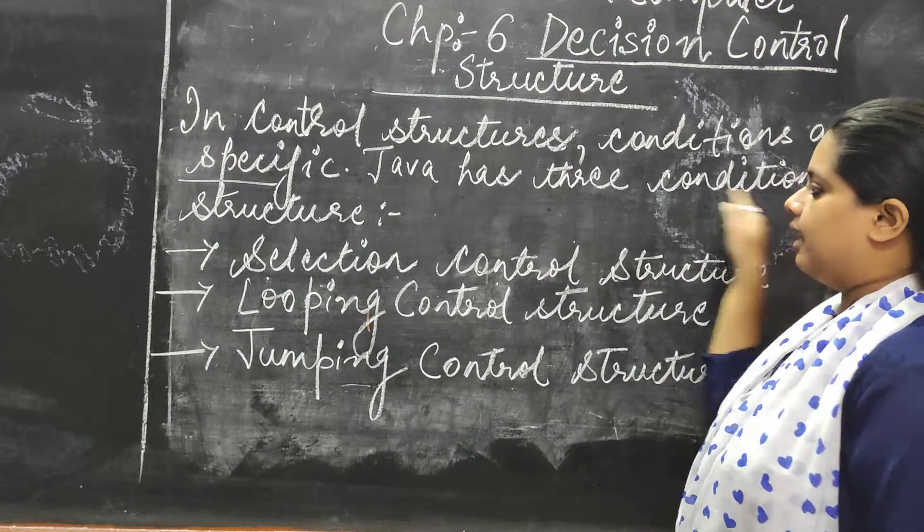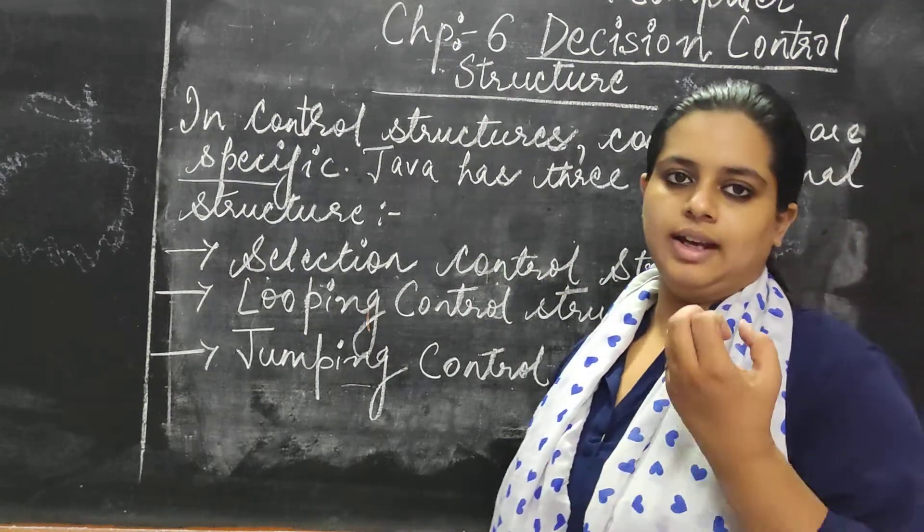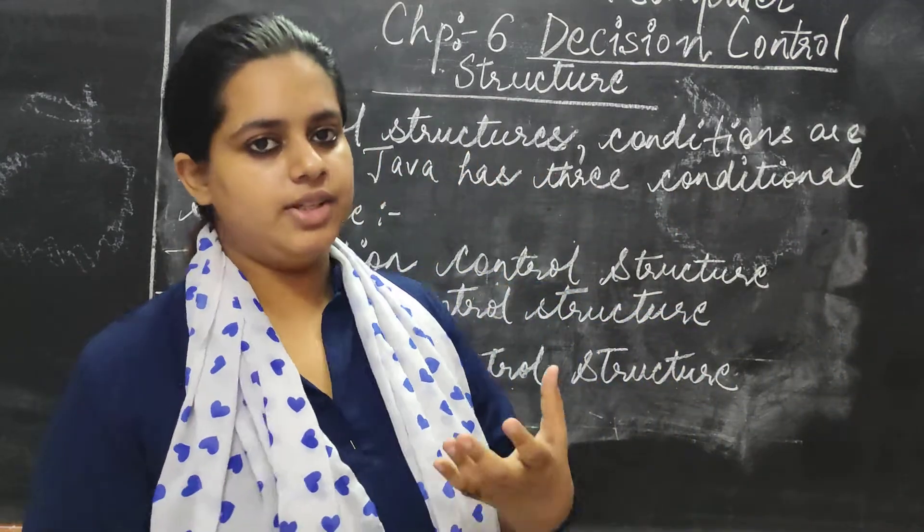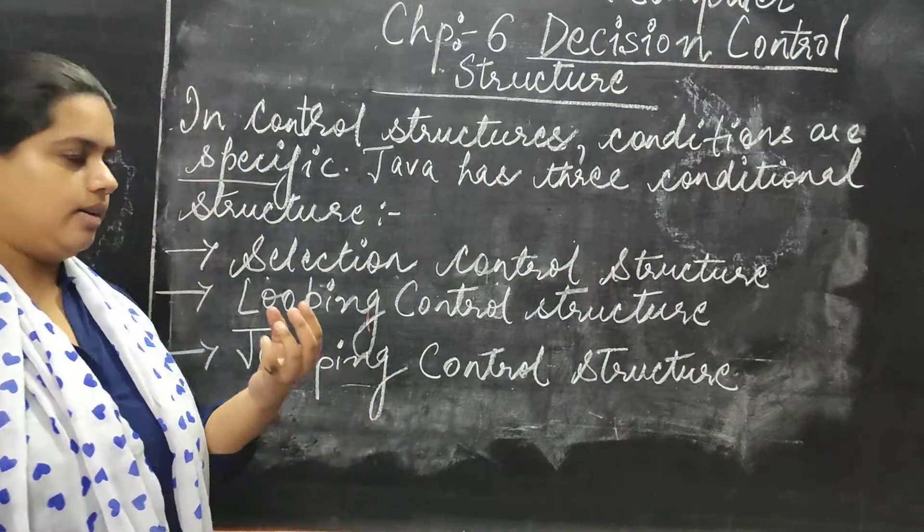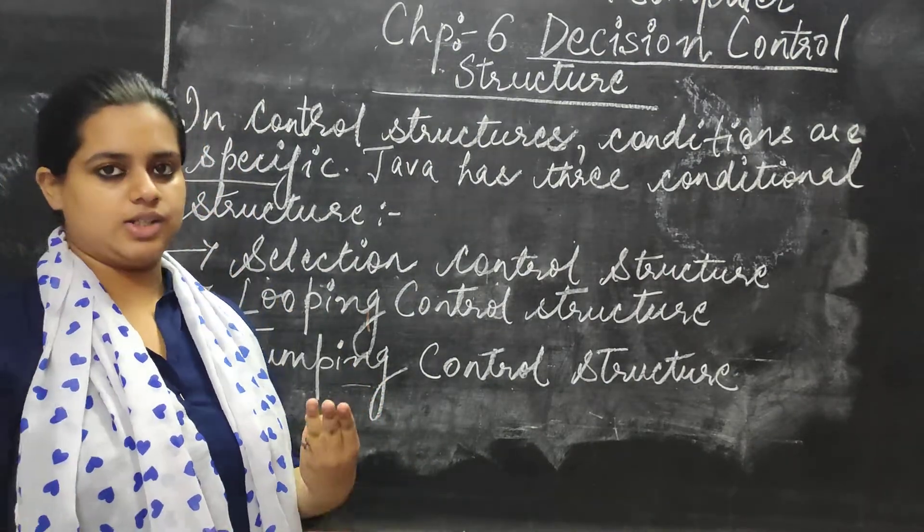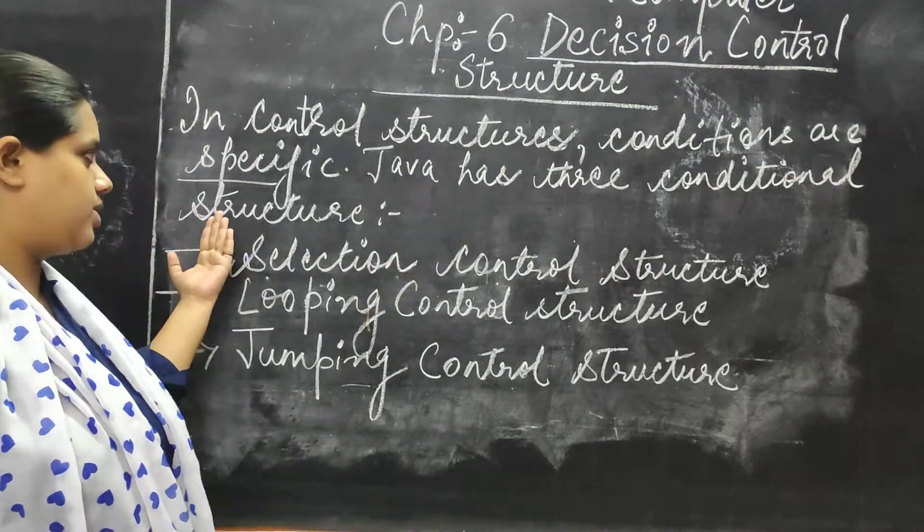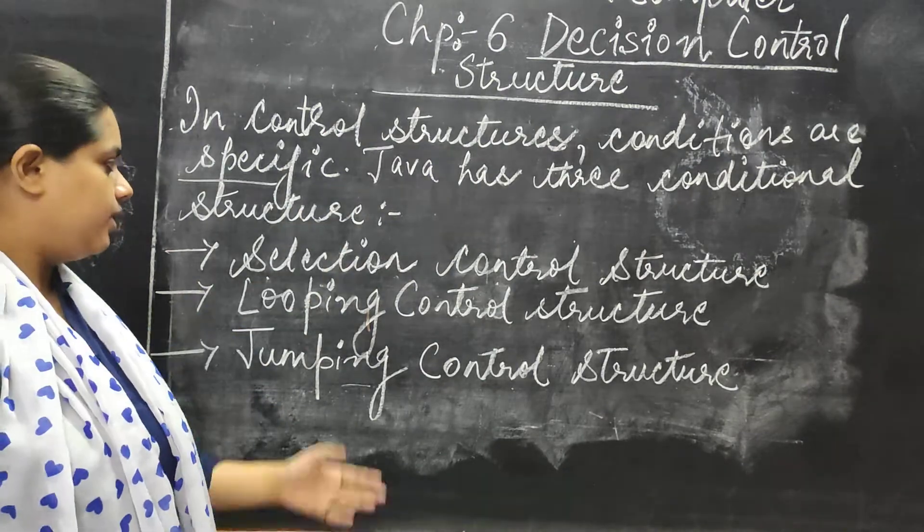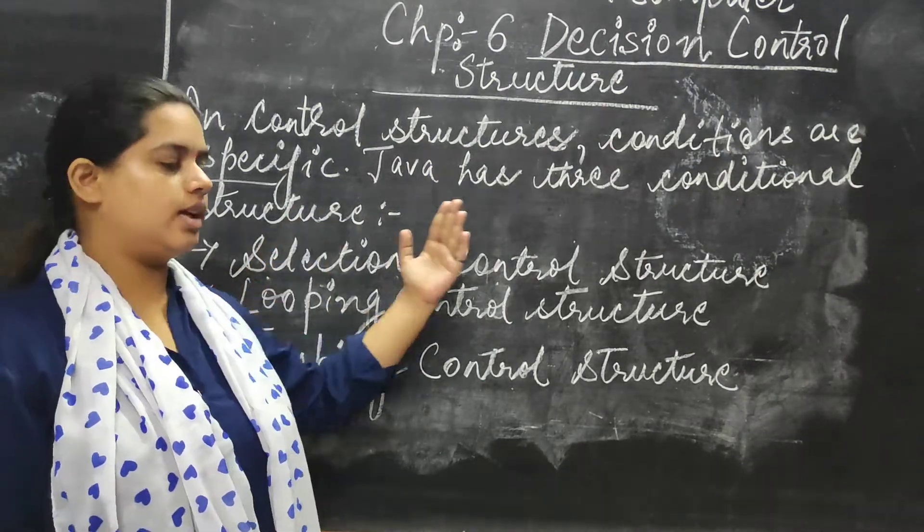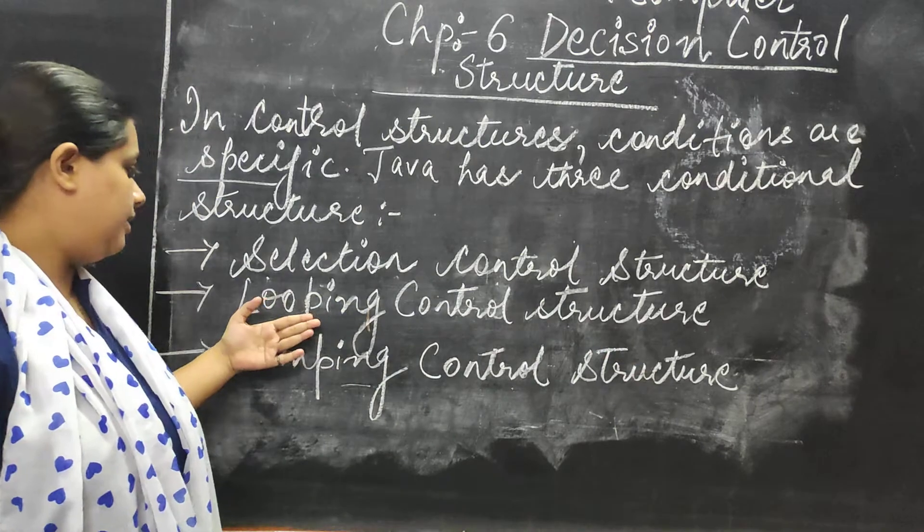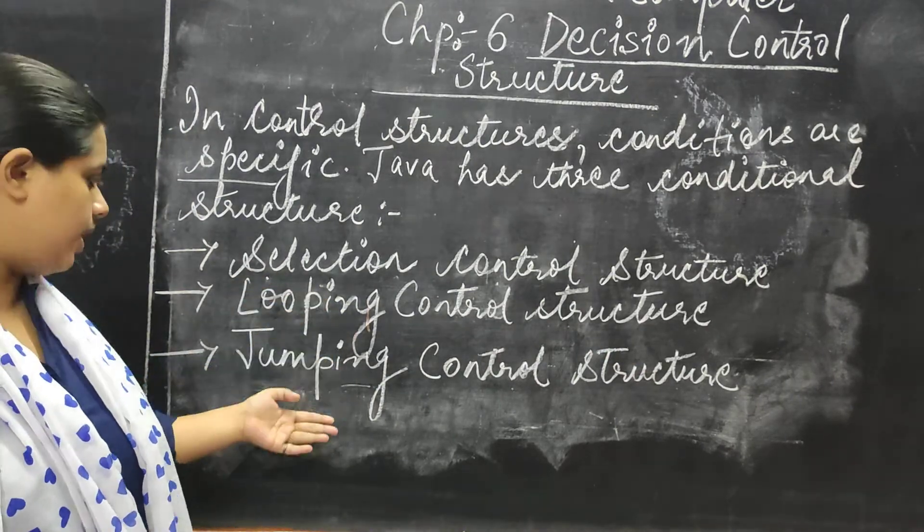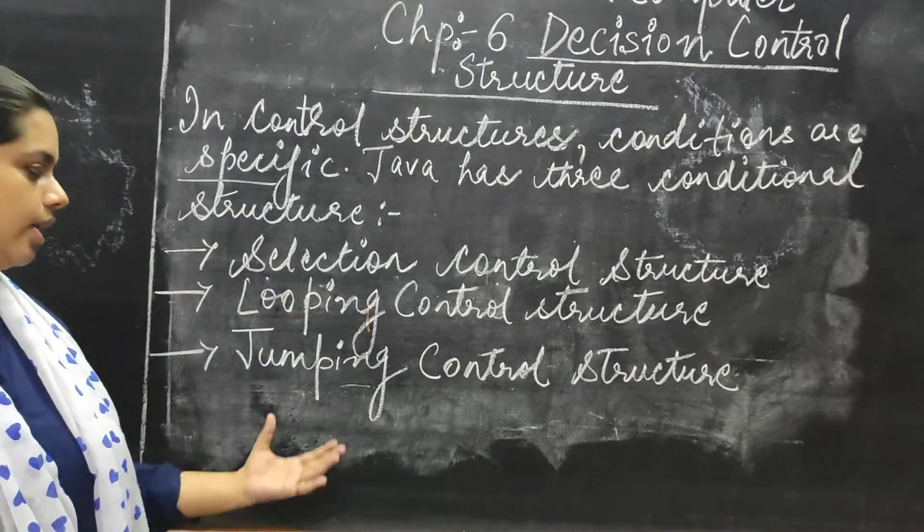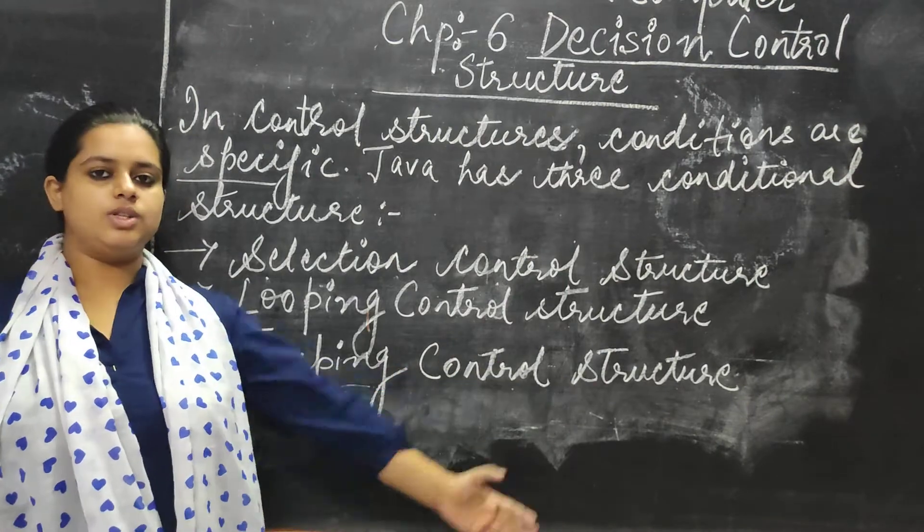Java has three conditional structures. Our high level Java language has three conditional structures. The first one is your selection control structure, the other is your looping control structure, and the third one is your jumping control structure.